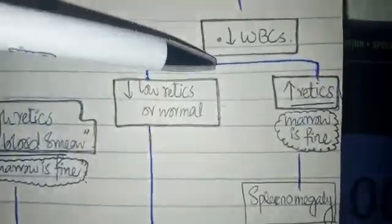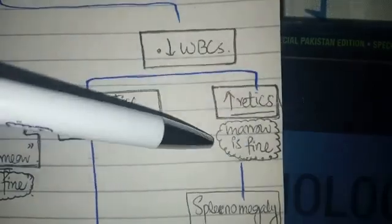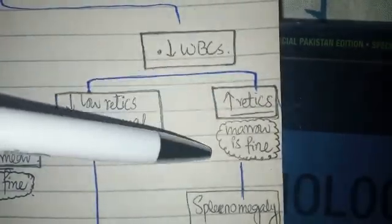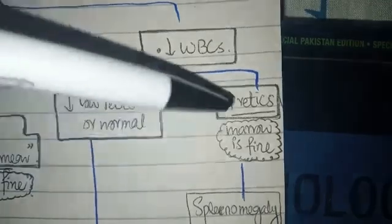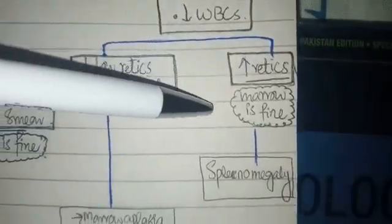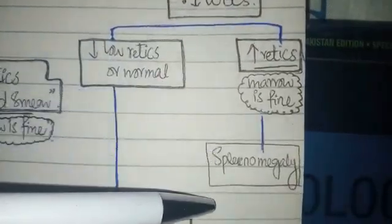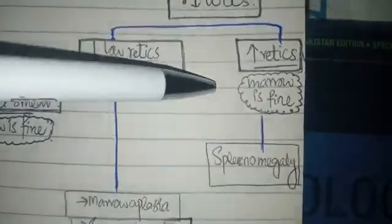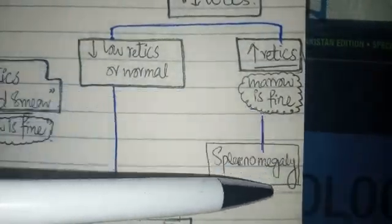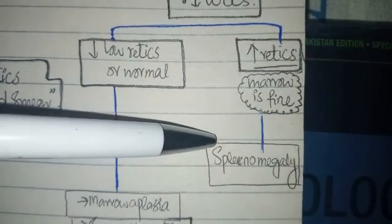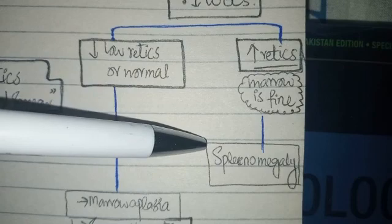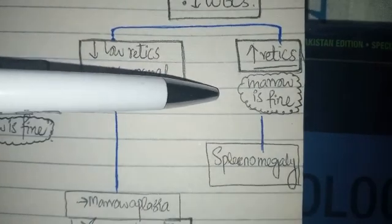If the reticulocyte count is high, it means the bone marrow is fine — there is no aplasia, no suppression. If the retics are high, it means the normocytic anemia is mainly caused by splenomegaly. In splenomegaly, extramedullary hematopoiesis occurs, which can lead to a high reticulocyte count.